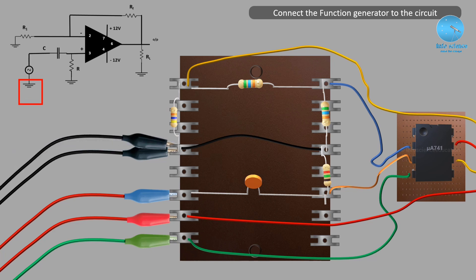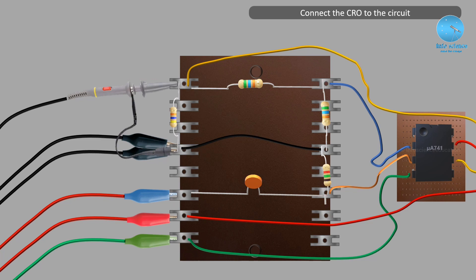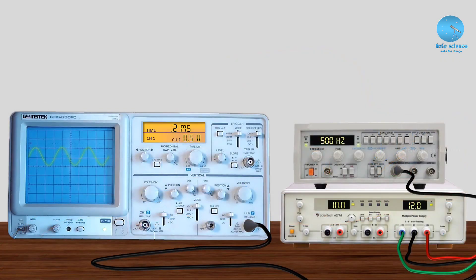The last connection is the CRO. The CRO measuring probe connects to the circuit output node. Voltage measurements are taken using the CRO. We go to the power supply and the CRO displays the waveform. The frequency is adjusted on the CRO and readings are taken.